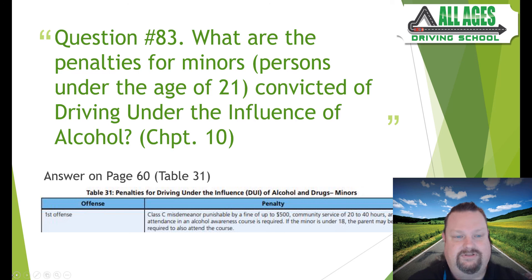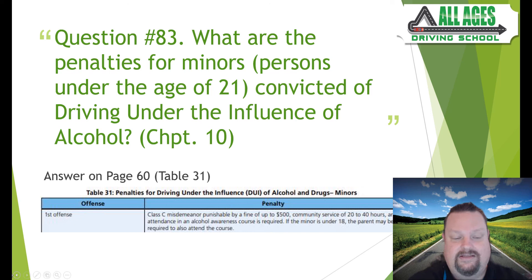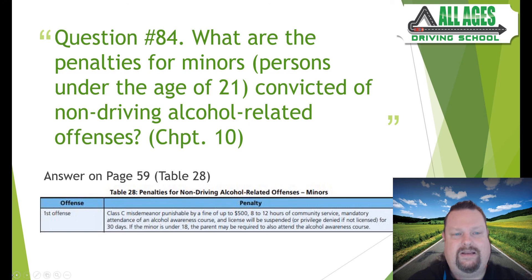Question number eighty-three: what are the penalties for minors (persons under age 21) convicted of driving under the influence of alcohol? Chapter 10, page 16, table 31. First offense: a Class C misdemeanor punishable by a fine up to $500 — remember that number for the test. It may also lead to 20 to 40 hours of community service and mandatory attendance in an alcohol awareness course. If the minor is under 18, the parent may also be required to attend the course.